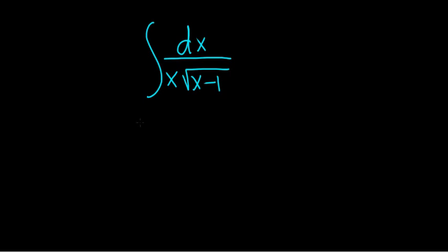Integrate dx divided by the quantity x times the square root of x minus 1. Solution: So this looks pretty tough, and I think the idea here might be to call this entire piece here u.